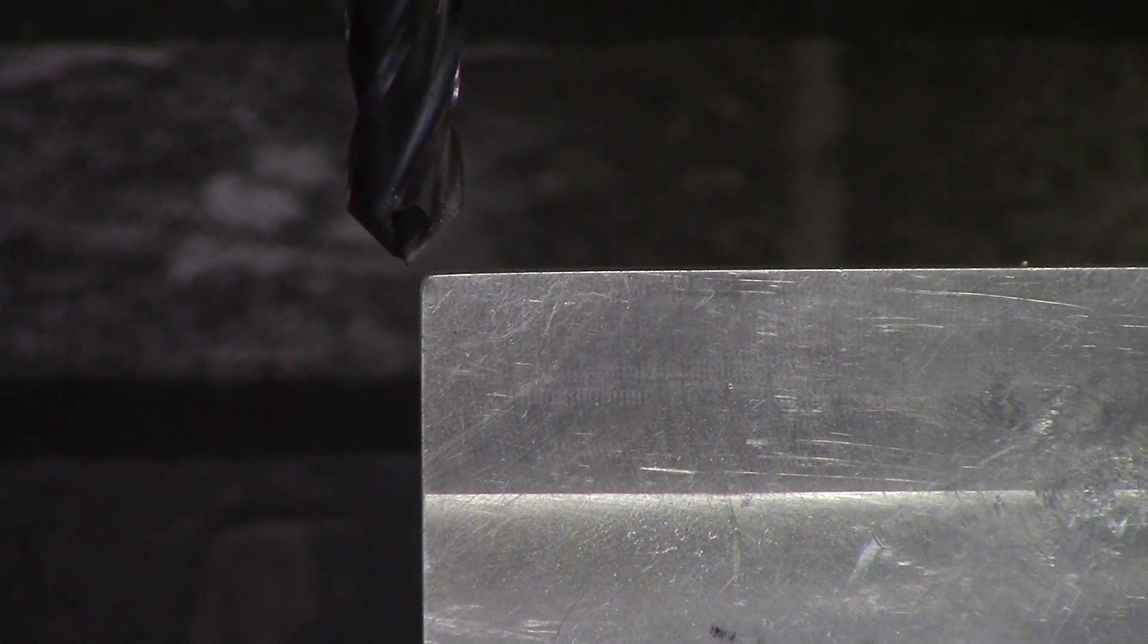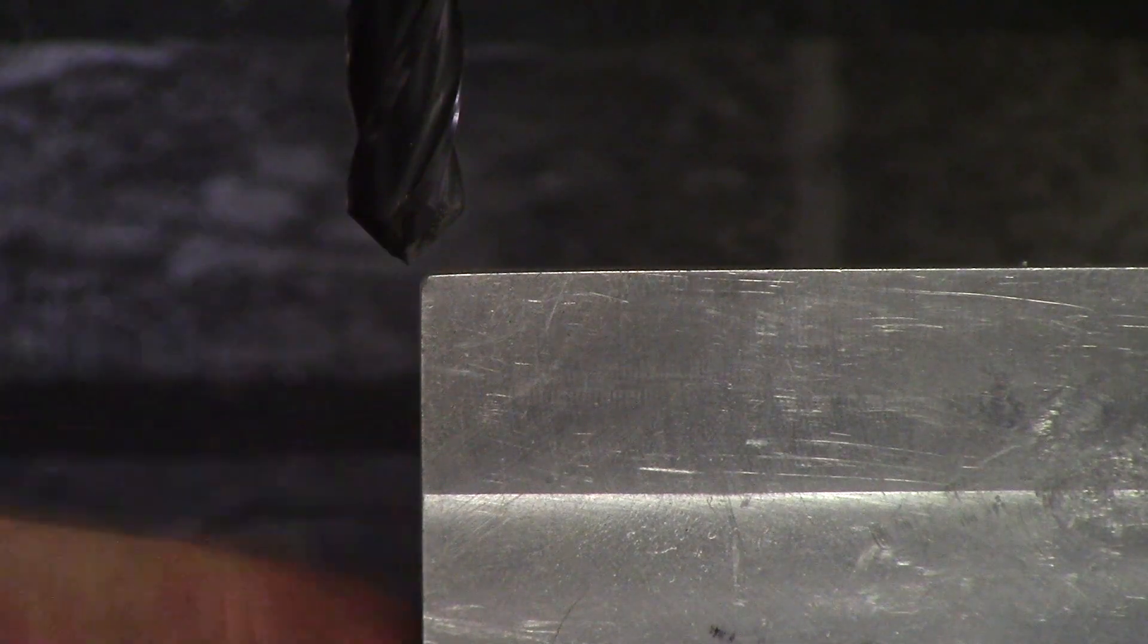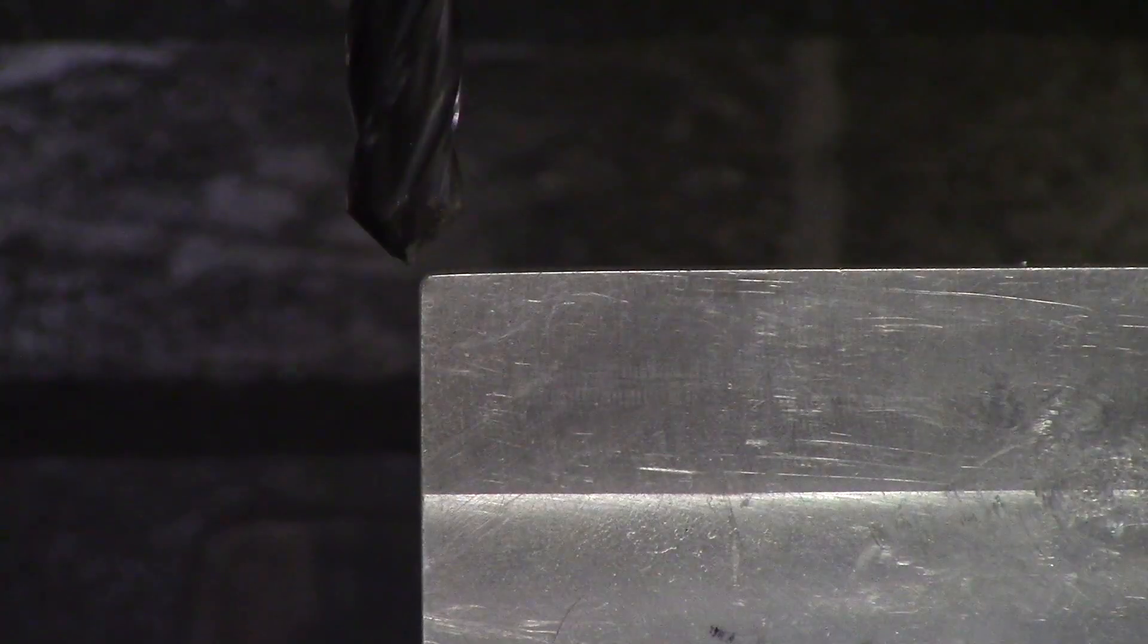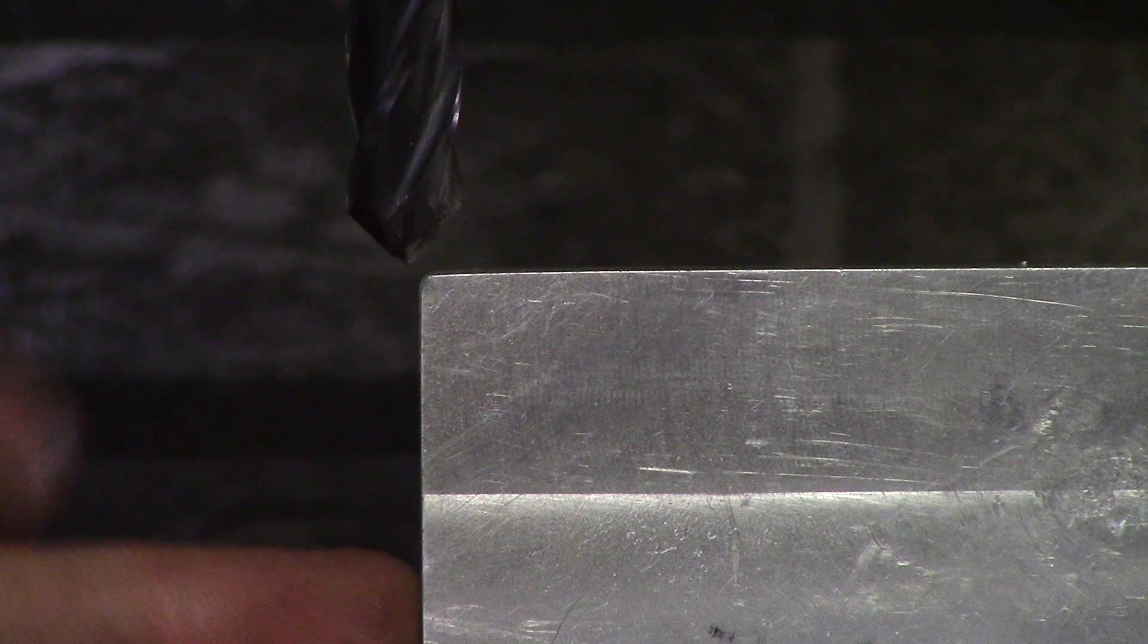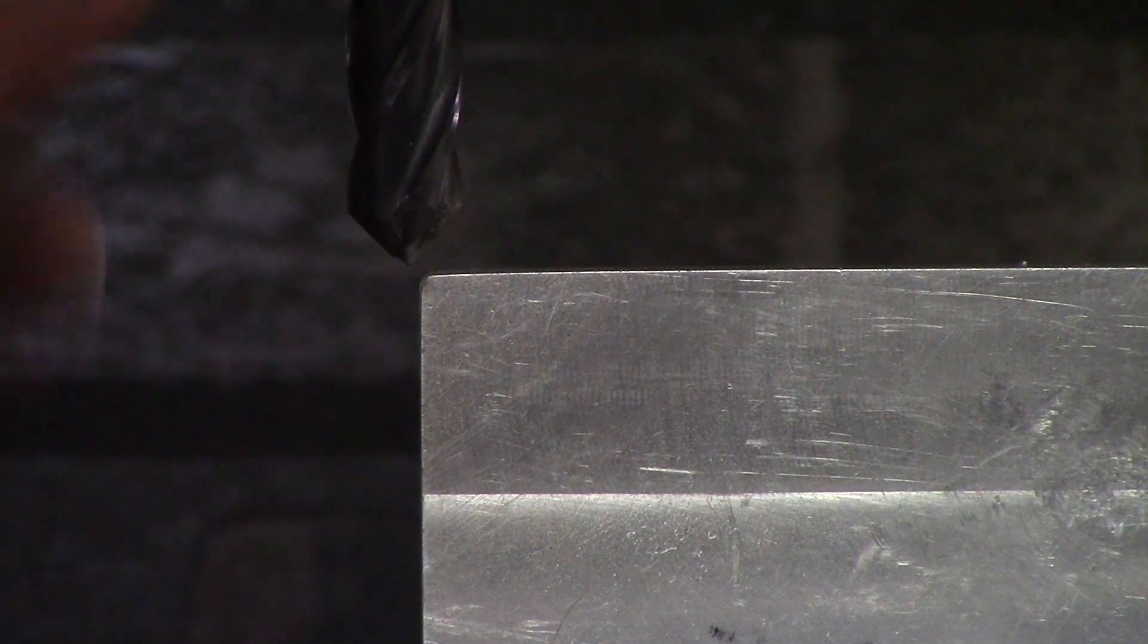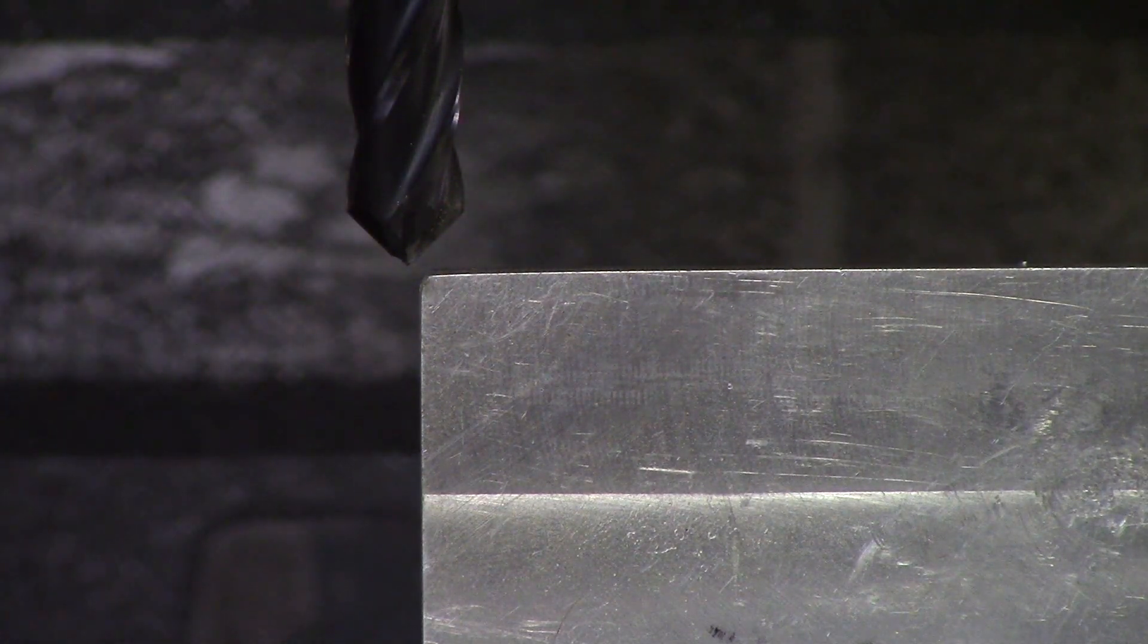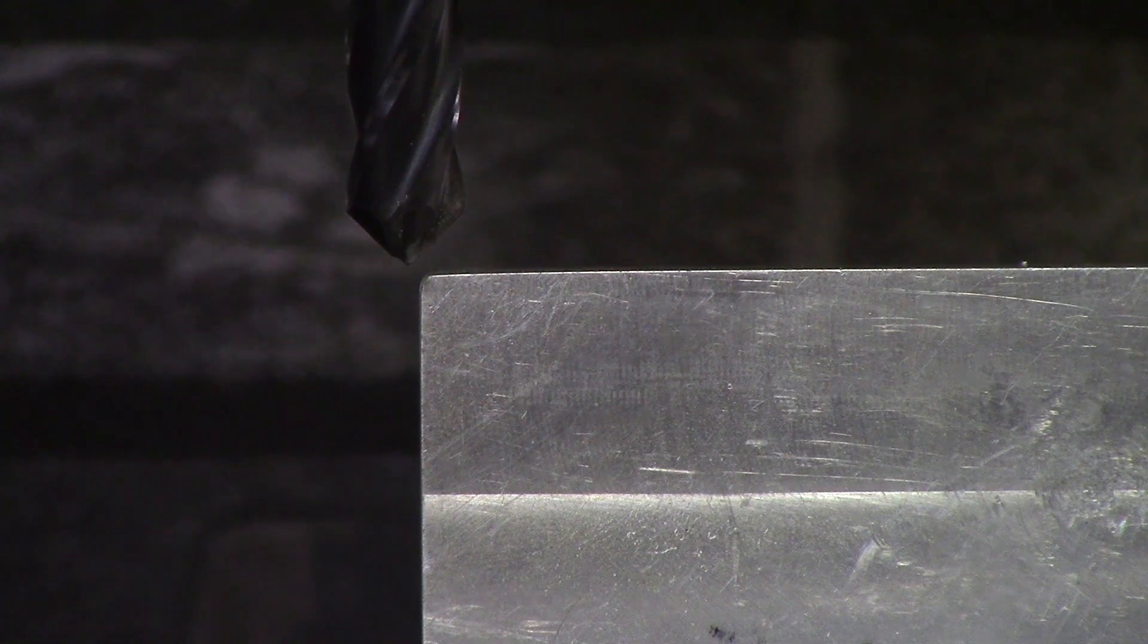After you eyeball the center of your drill mill to be on the left or right side depending on what side you're cutting, all you have to worry about is bringing your knee up and bringing your drill mill deeper into your part. You do not have to move in the X direction once you've set this.